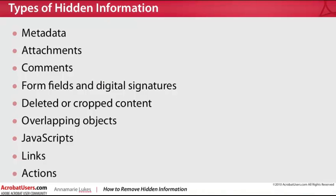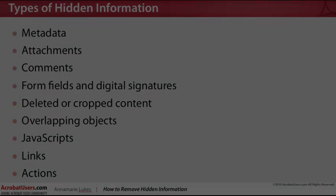Some of the types of information that can be hidden and removed with the Remove Hidden Information tool are metadata, attachments, comments, form fields and digital signatures, deleted or cropped content, overlapping objects, and now in Acrobat 10, also JavaScripts, links, and actions.